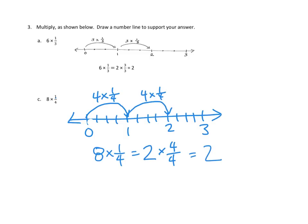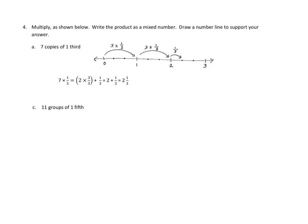Excellent. So oddly, we got to the exact same place as we did up here in problem 3A. 6 one-thirds is the same as 8 one-fourths. Interesting. All right, let's take a look at one more problem in tonight's homework. Let's take a look at problem number 4. We are going to multiply as shown below. Write the product as a mixed number. Draw a number line to support your answer.